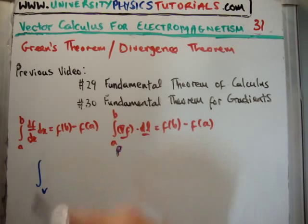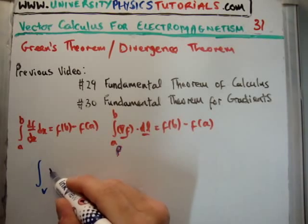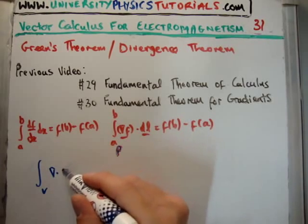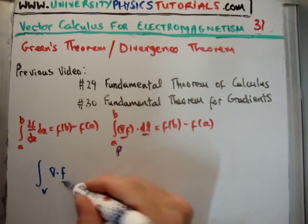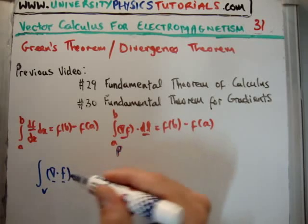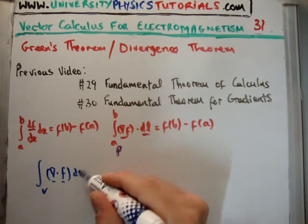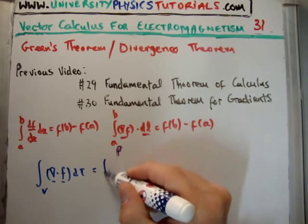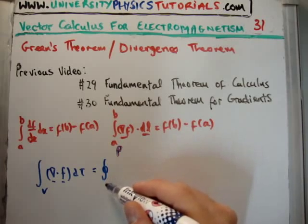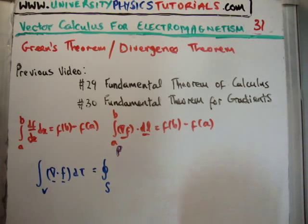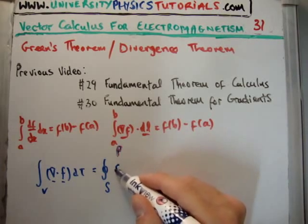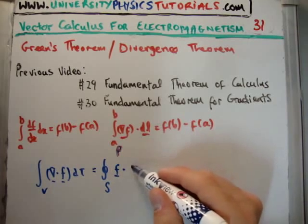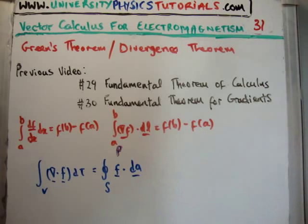So, what we're doing here is, we're going to take the divergence of our function f, let's say it's a vector, we're going to take the divergence of it, and integrate it over a volume, d tau. And that's going to be equal to the closed integral over a surface of your function f dot dA. Okay, so that's what it is, right?